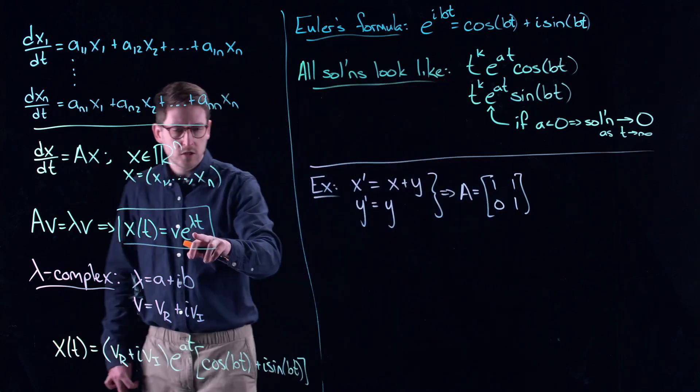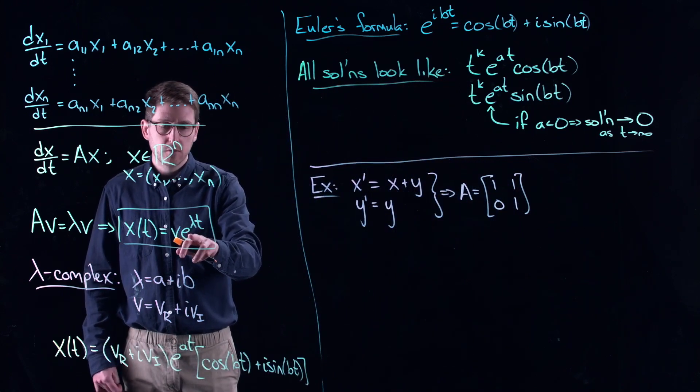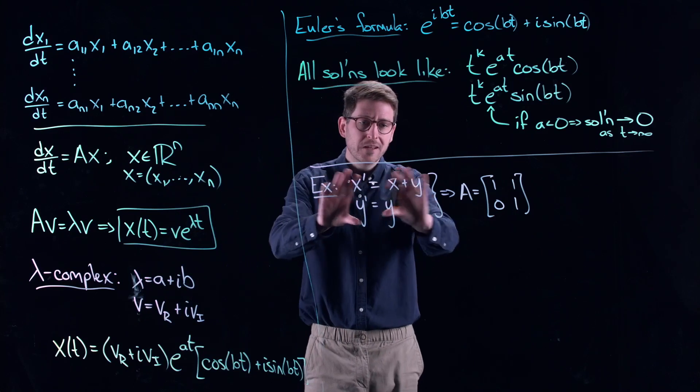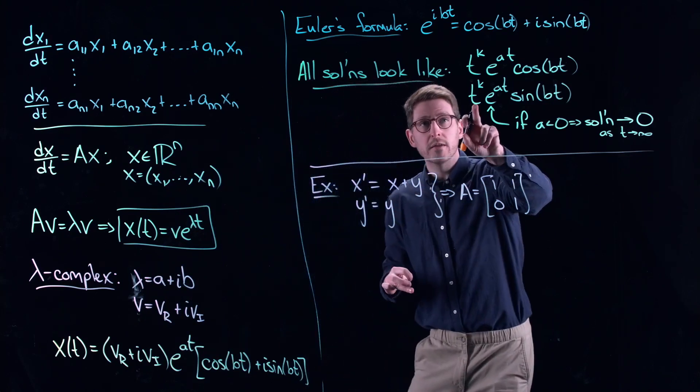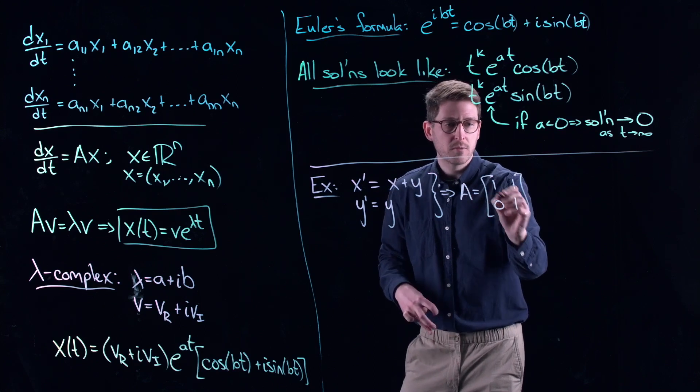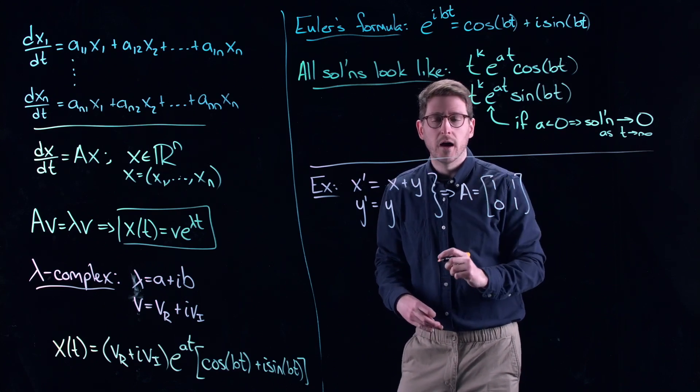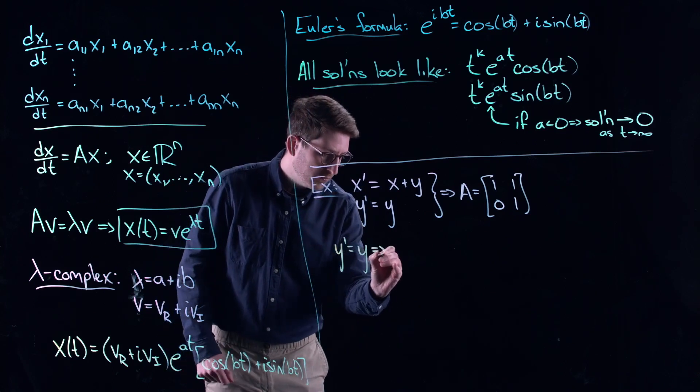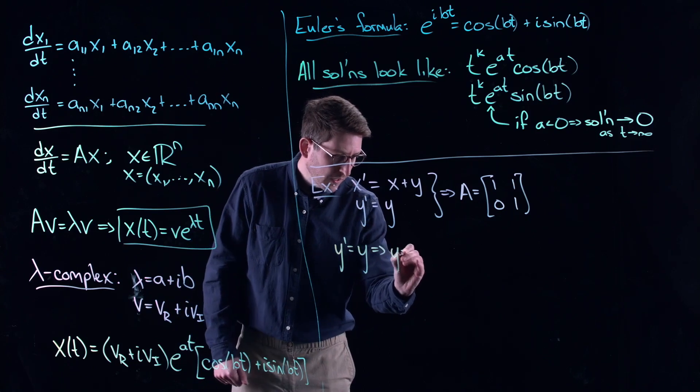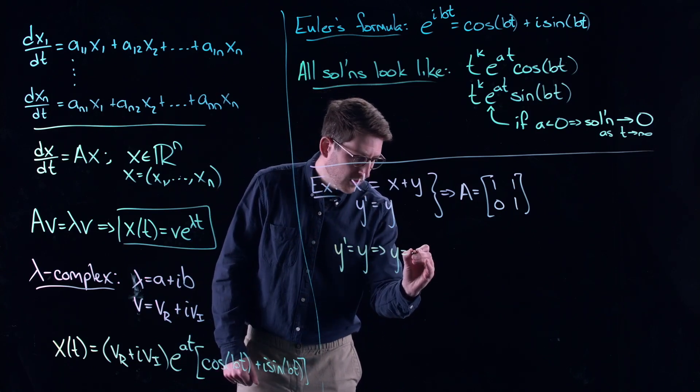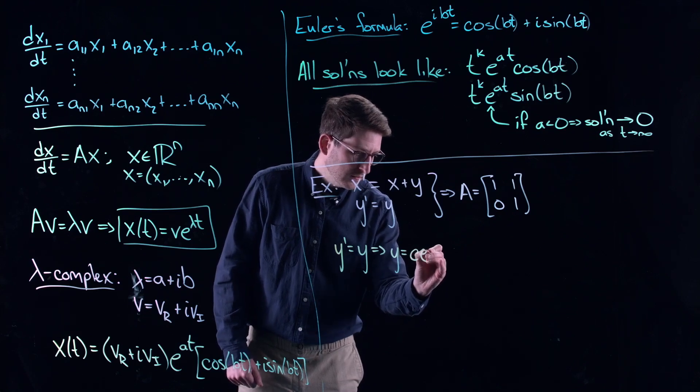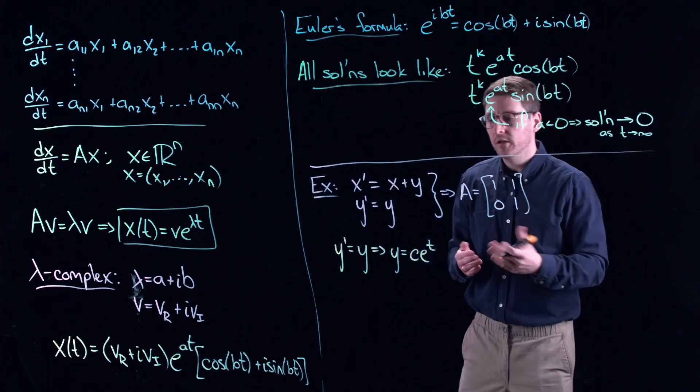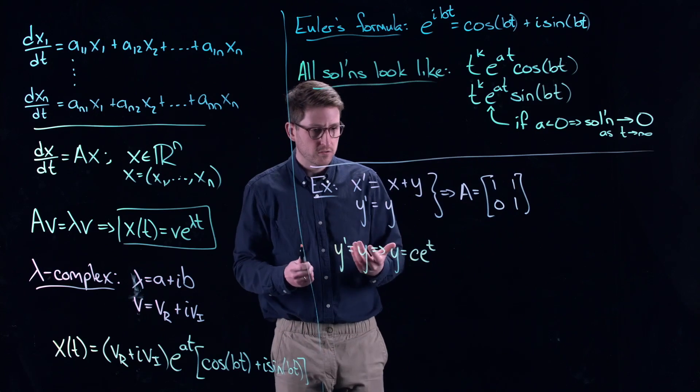The nice thing about this equation is we can actually solve it. I'm going to show you where these t's start popping up. Notice we have a double eigenvalue here. So solving y' = y, this part completely decouples. This gives you y = c*e^t. That is the general solution. This c is a constant of integration. It can be determined by initial conditions.